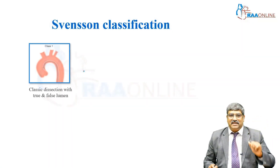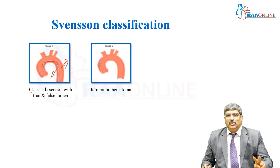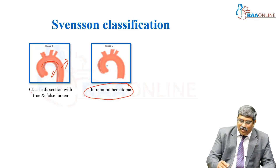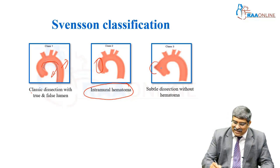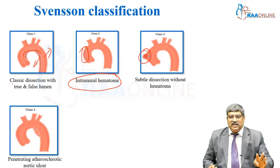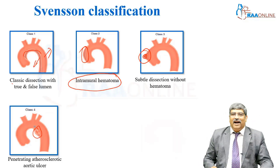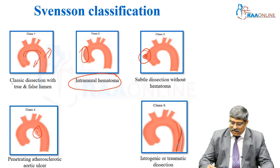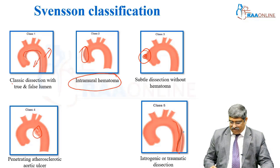Here you have 5 classes. Class 1 is nothing but a classic dissection with true and false lumen. Class 2 is intramural hematoma — here you can see the intramural hematoma. Class 3 is a subtle dissection without hematoma. Class 4 is penetrating atherosclerotic aortic ulcer. And finally, class 5 is a traumatic or iatrogenic dissection. This is Stevenson's classification.